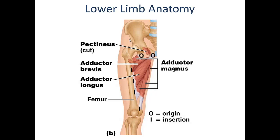In the medial compartment of the thigh are the primary hip adductors. These are used to return the leg to the midline of the body, or to the anatomical position, after the hip has been abducted. They consist of the adductor brevis, the adductor longus, and the adductor magnus. Depending on their specific origin on the ischium and pubis and the hip joint angle at any given point in time, they can also be used for hip flexion and/or extension as well.